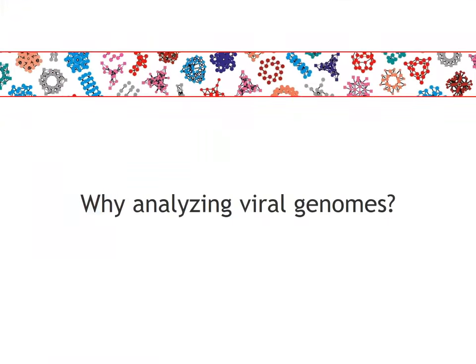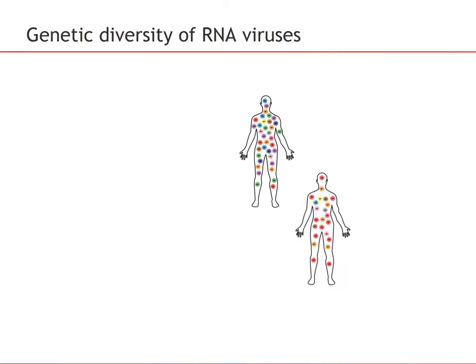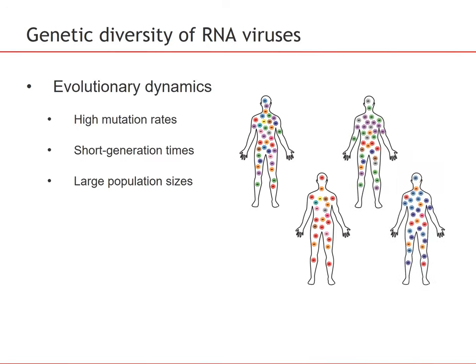I would like to start by motivating why we are interested in analyzing viral genomes. It turns out that especially RNA viruses display a huge amount of genetic diversity. RNA viruses have very high mutation rates, they tend to have short generation times, and they typically exist in very large population sizes, and these parameters generate a huge amount of genomic diversity in relatively short time scales.